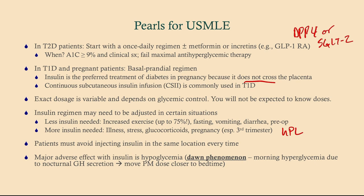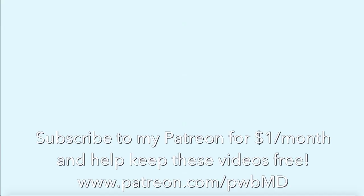Hypoglycemia is a big problem and this is why it's very difficult to dose insulin — depending on your activities or your meals, you may run into this more often than you'd want to. There's something called the dawn phenomenon that gets asked occasionally on your exam. Patients wake up with high blood sugar because overnight while sleeping they secrete growth hormone — that's normal — and growth hormone happens to increase your blood sugar. So they'll wake up with a high morning fasting blood glucose. Ideally we would not like this to happen, so what we would do is move up that PM dose of insulin closer to bedtime.